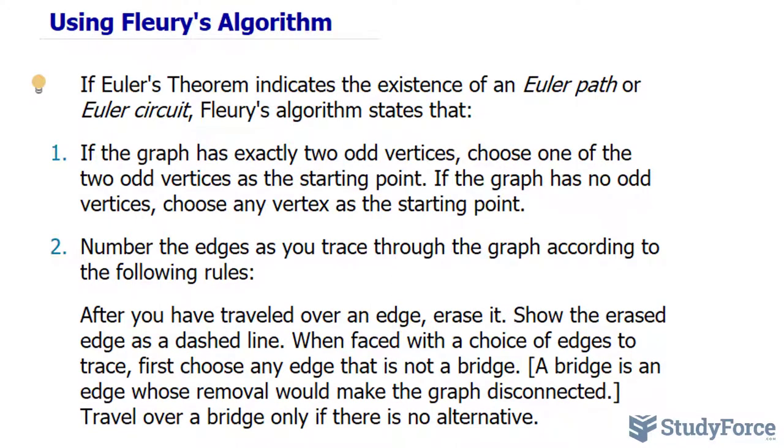So with that being said, the algorithm states that if the graph has exactly two odd vertices, choose one of the two odd vertices as the starting point. If the graph has no odd vertices, choose any vertex as the starting point.